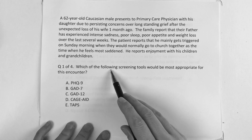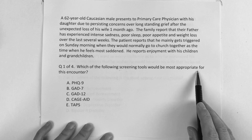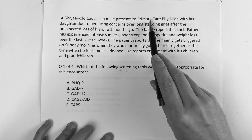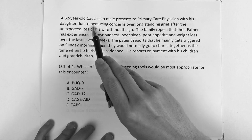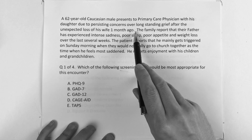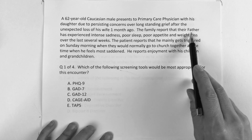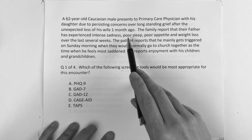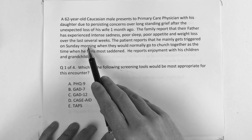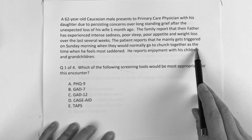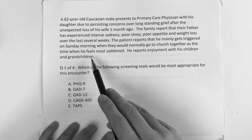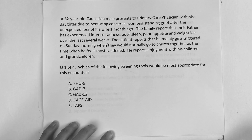Alright guys, this question reads: which of the following screening tools would be most appropriate for this encounter? A 62-year-old Caucasian male presents to the primary care physician with his daughter due to persistent concerns over long-standing grief after the unexpected loss of his wife one month ago. The family reports that their father has experienced intense sadness, poor sleep, poor appetite, and weight loss over the last several weeks. The patient reports that he mainly gets triggered on Sunday morning when they would normally go to church together as a time when he feels most saddened. He reports enjoyment with his children and grandchildren.